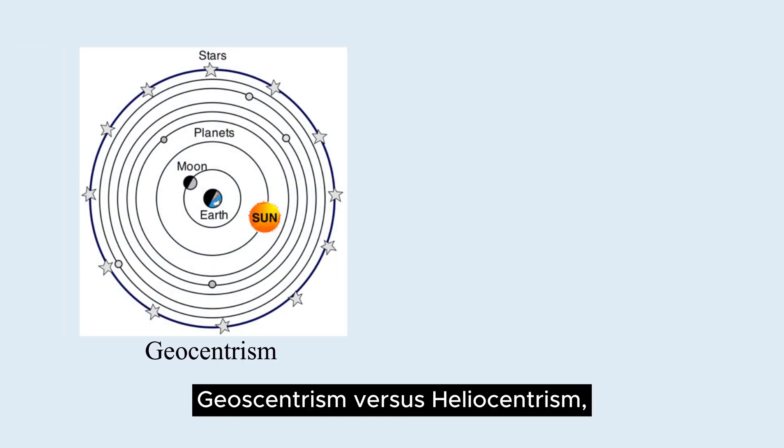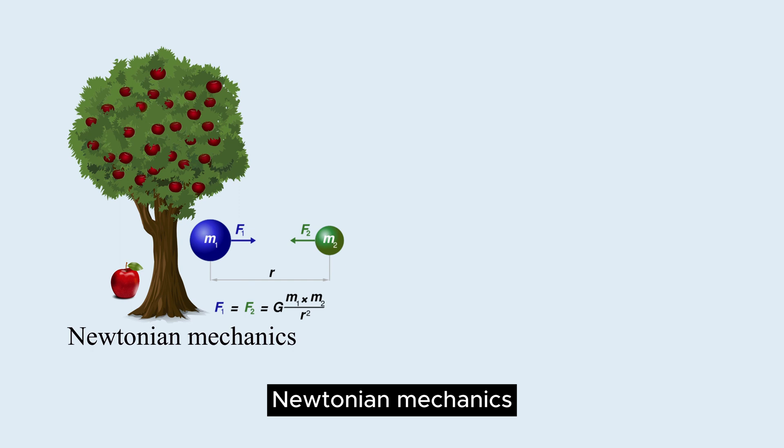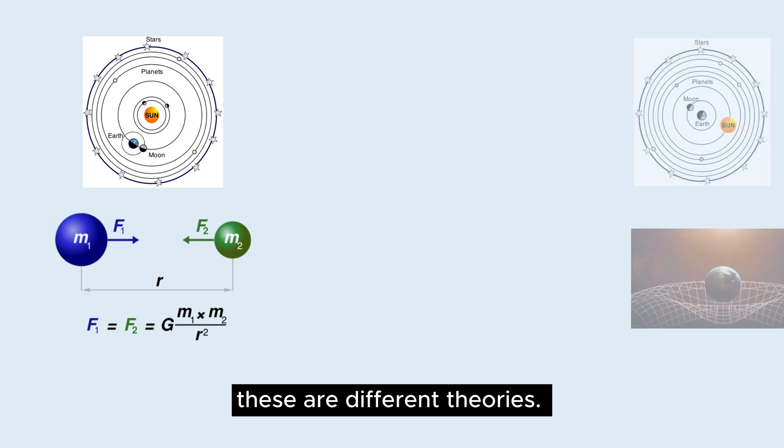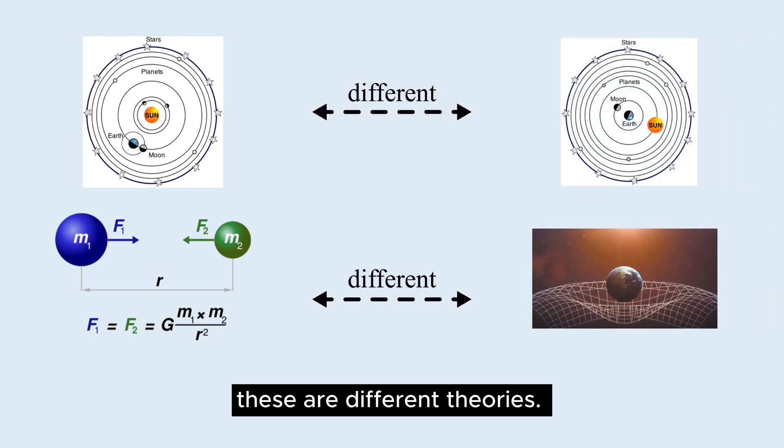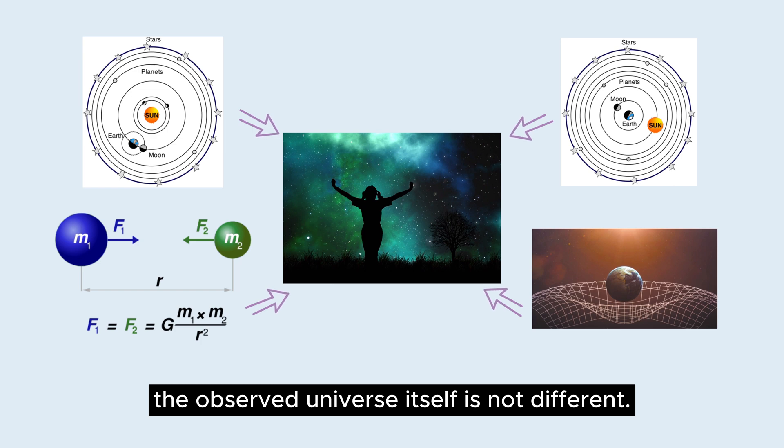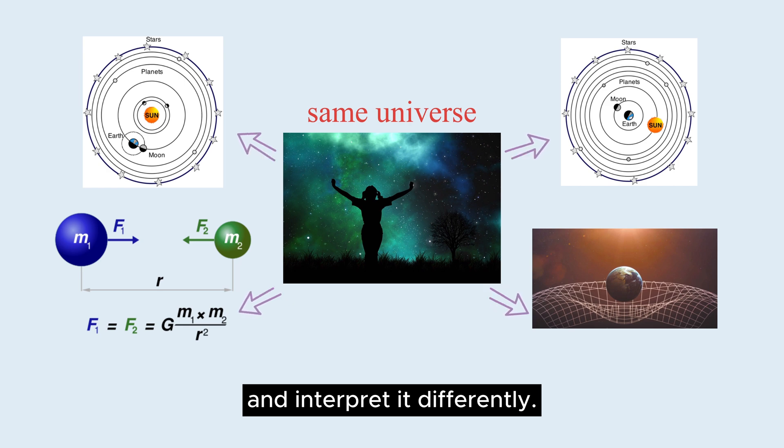Geocentrism versus Heliocentrism. Newtonian Mechanics versus Einstein's Theory of Relativity. These are different theories. However, the observed universe itself is not different. These are theories that observe the same universe and interpret it differently.